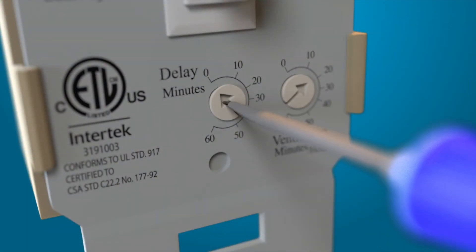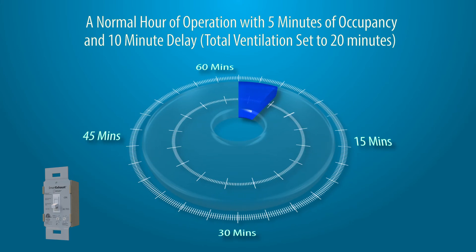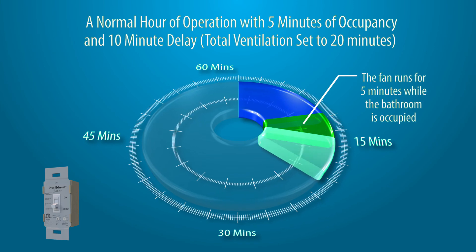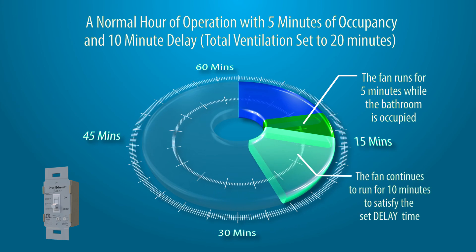The delay dial is set to 10 minutes per hour. Someone uses the bathroom for 5 minutes and manually turns the Smart Exhaust on. The microprocessor logs this 5 minutes of use. The occupant exits the bathroom, turning the switch off, and the Smart Exhaust continues to run the fan for the 10 minutes of delay run time.